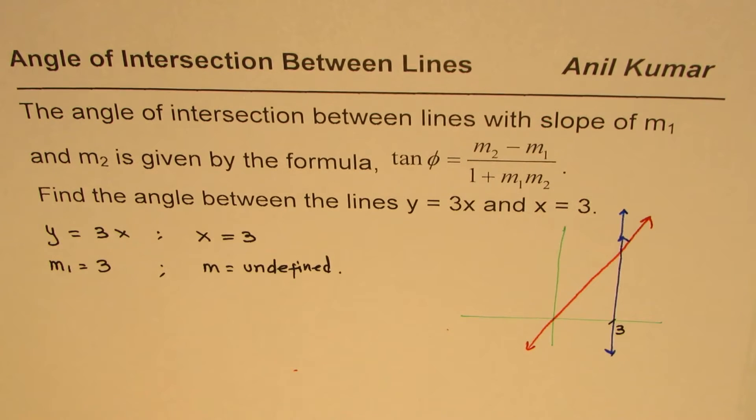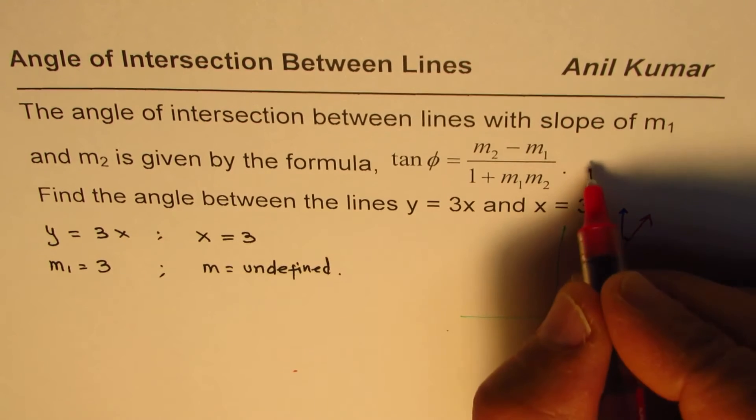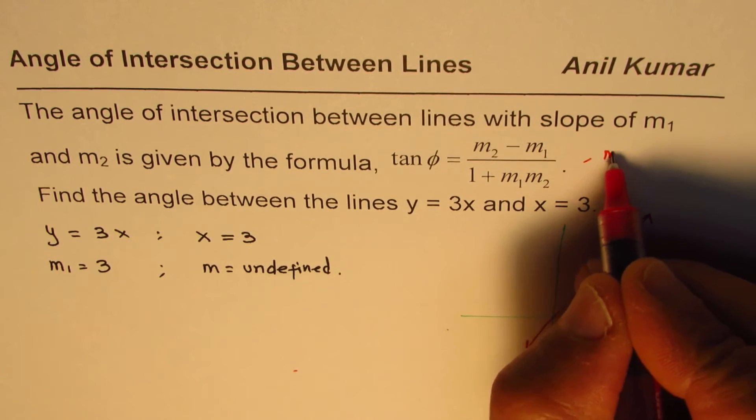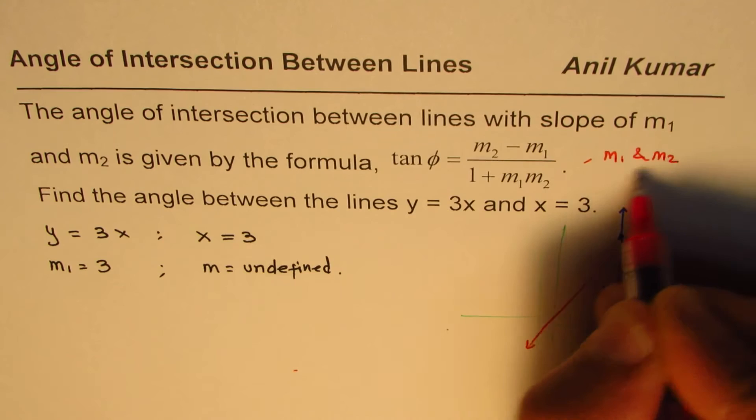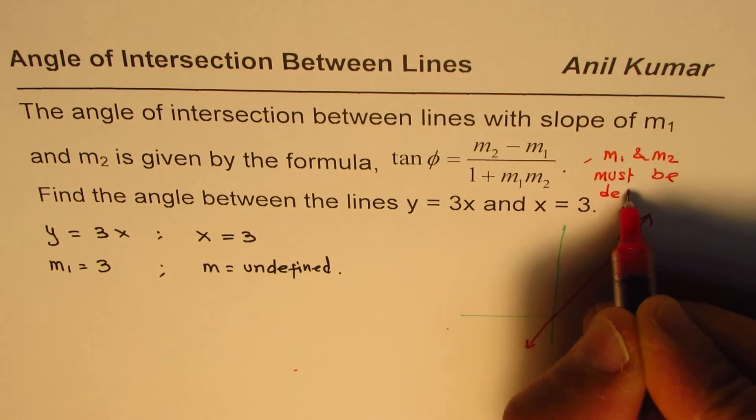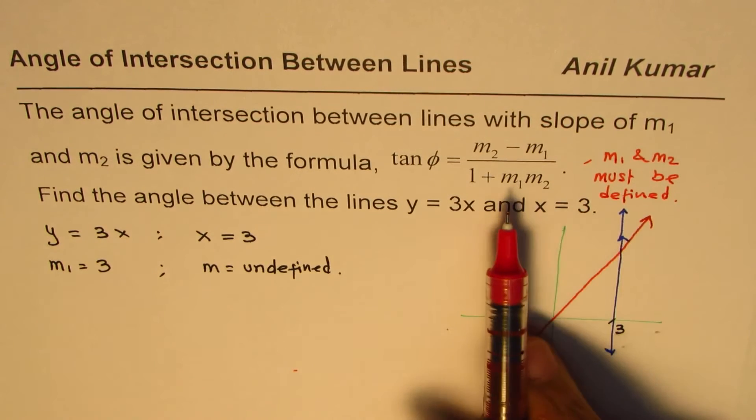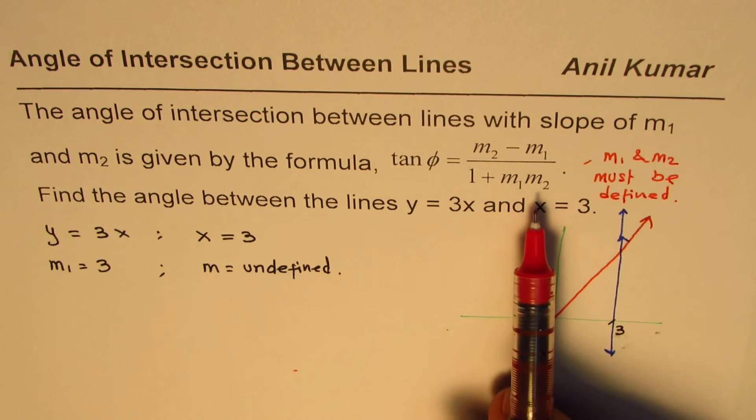Now whenever you have a situation where the slope is undefined, in that case, we cannot use the formula. So here we know m1 and m2 must be defined. So this formula is not valid for lines which are vertical.